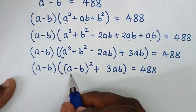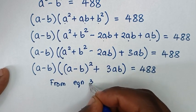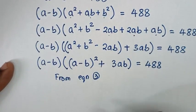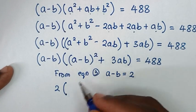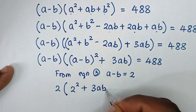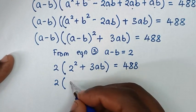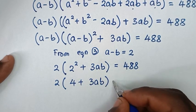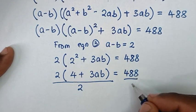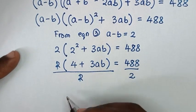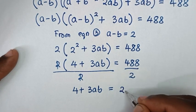From equation 3, a minus b equals 2. Substituting: 2 times [2² + 3ab] equals 488, so 2 times [4 + 3ab] equals 488.